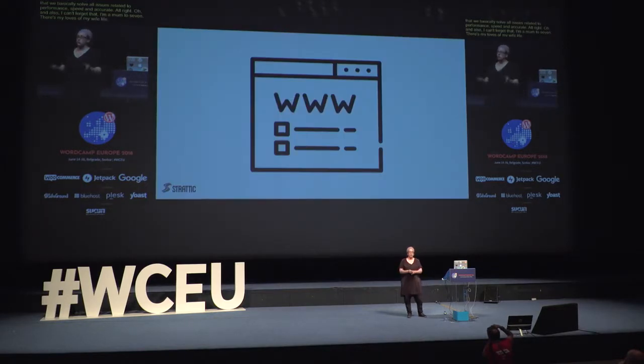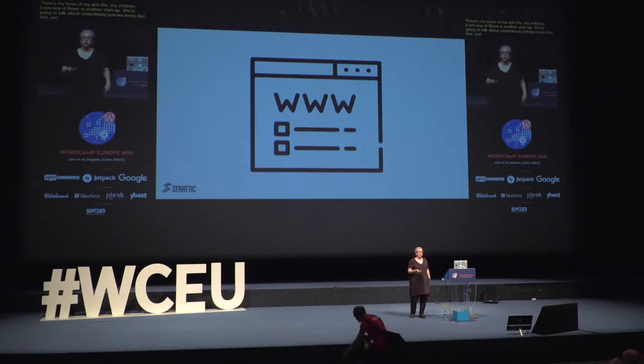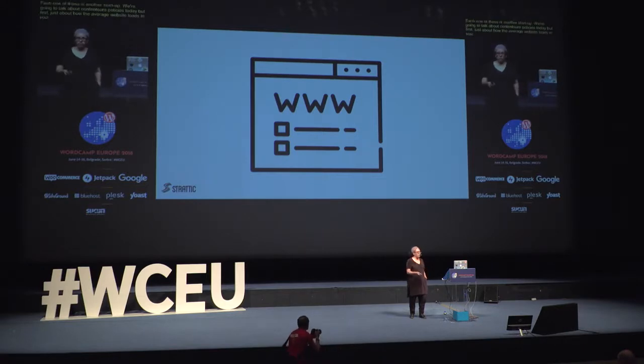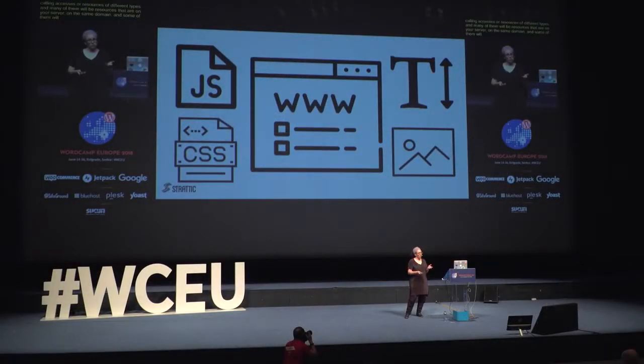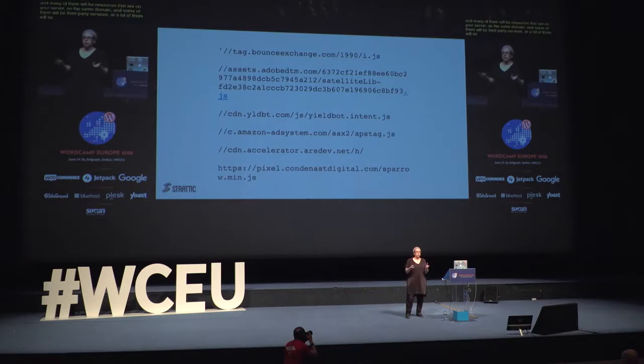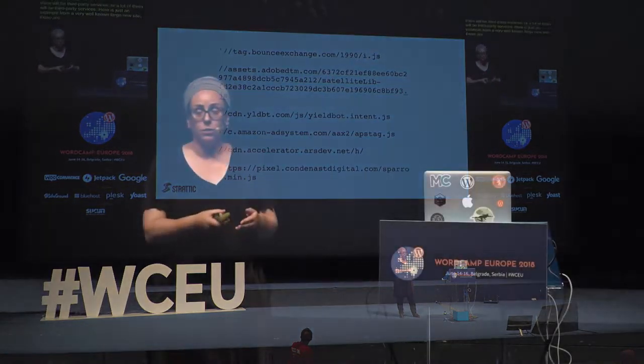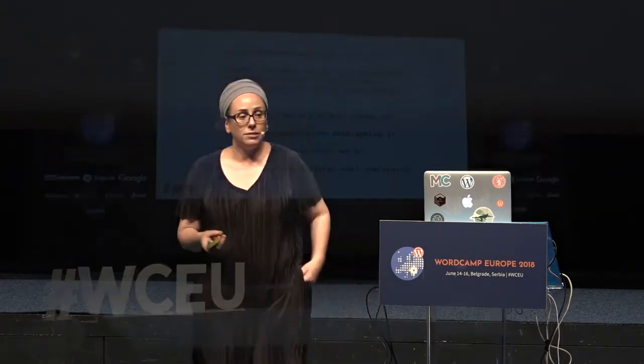So we're going to talk about content security policies today. But first, let's talk about how the average web page loads in your browser. When you visit a web page, it's accessing or calling different assets or resources of different types. Many of them will be resources that are on your own server on the same domain, and some — or a lot — will be third-party services. Here's an example from a very well-known large news site. These are some of the types of assets it's calling when you load their home page, and they're not assets they own — they're third-party assets from Bounce Exchange, Adobe, things like that.